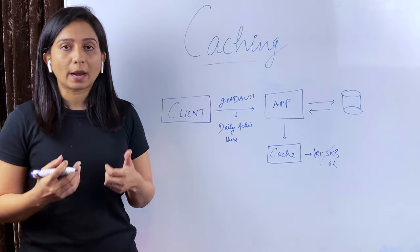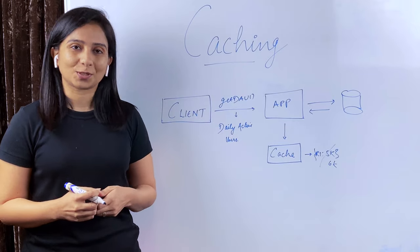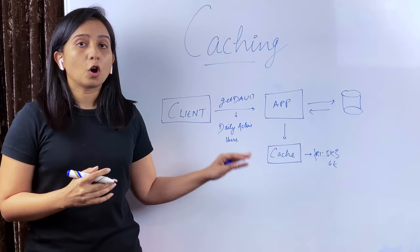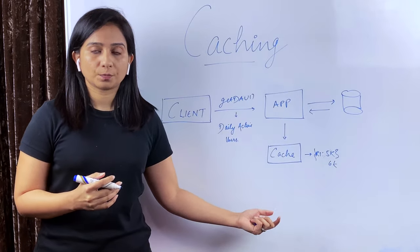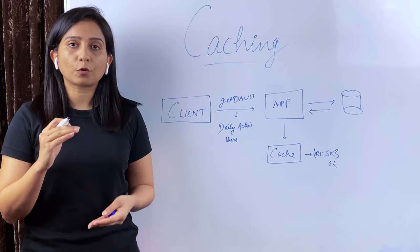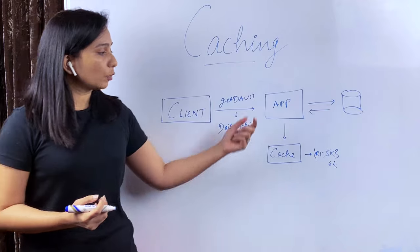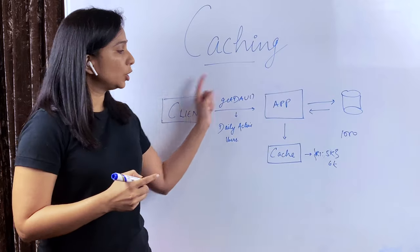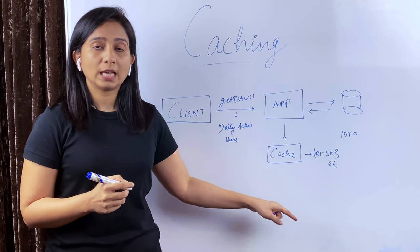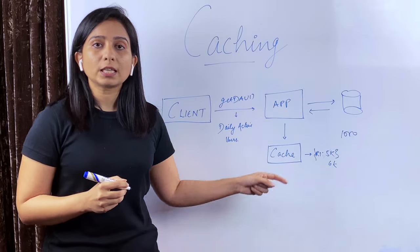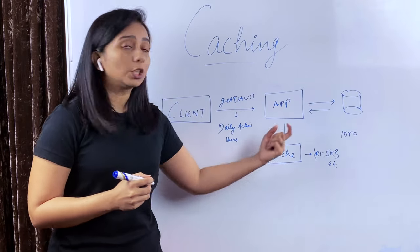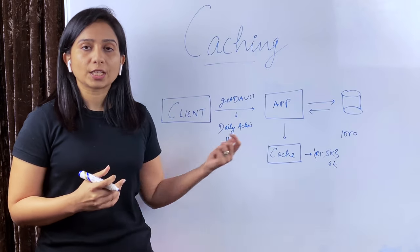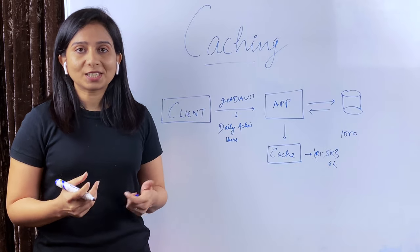In some cases you have to use a combination: keep an expiry and also update via application code whenever a new value comes in. It depends on which caching pattern you're using — whether application code invalidates the cache, expiry does it, or a combination is used. Now, even after setting expiry, there are many keys available in your cache and every cache solution has a limit to the number of keys it can store. When a new key has to be added and the limit is full — say 1000 keys — one of the existing keys must be evicted to make room. This is called cache eviction.